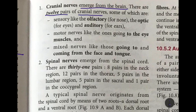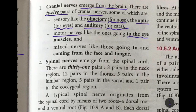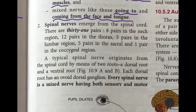The cranial nerves, as the name tells you, come from the brain. There are 12 pairs of cranial nerves: sensory nerves like olfactory for the nose, optic for the eyes, and auditory for the ears; motor nerves carrying impulses to the eye muscles; and mixed nerves — both sensory and motor — like those going to and coming from the face and tongue.